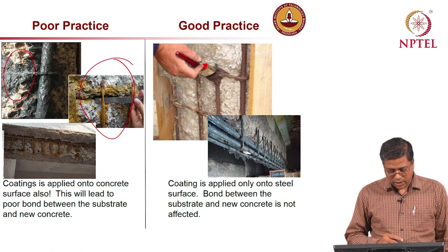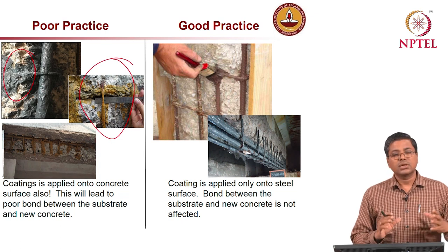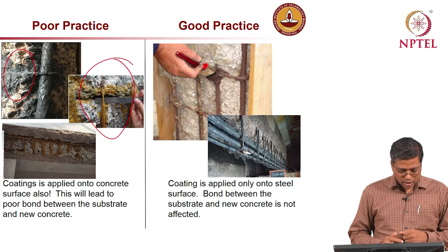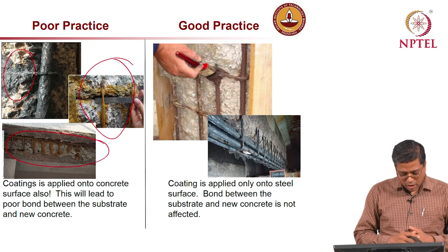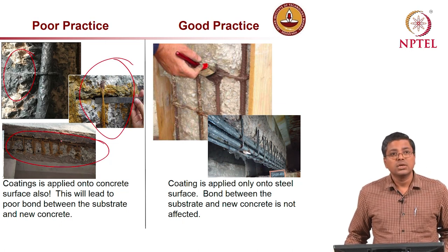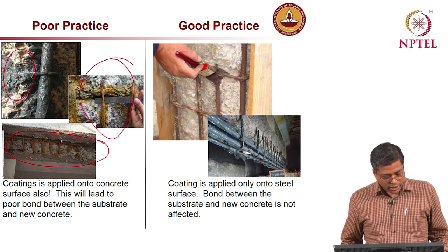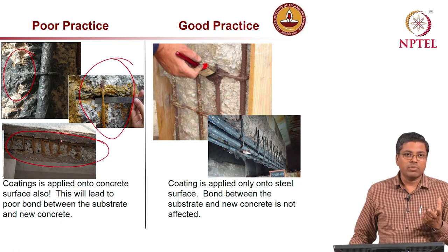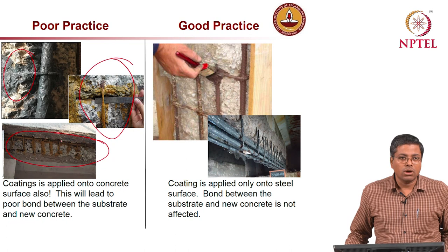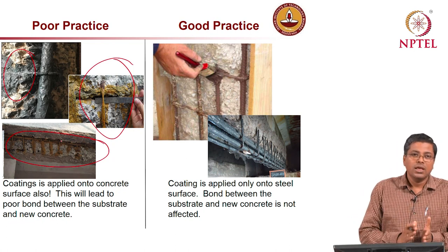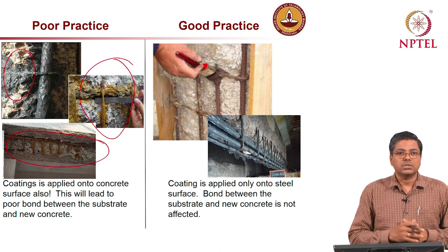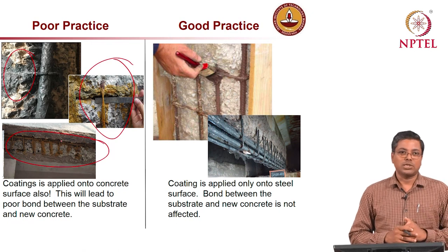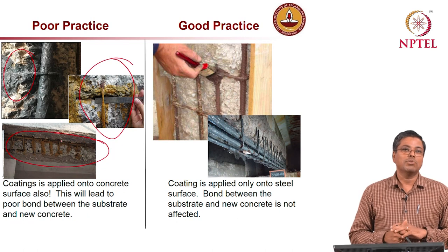Whenever we talk about these chemicals, we must consider whether it is really beneficial to apply them or whether there is a better approach. A large amount of chemical is wasted when applied onto the surrounding concrete surface rather than just the steel. A practical tip: give the worker a small brush with diameter exactly like that of the rebar — this solves the problem and avoids waste.